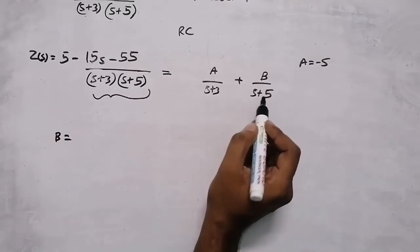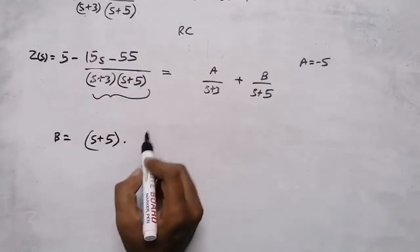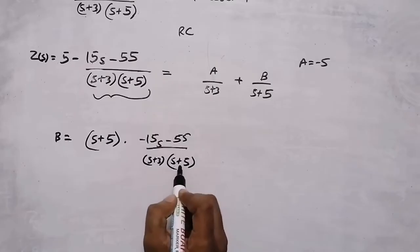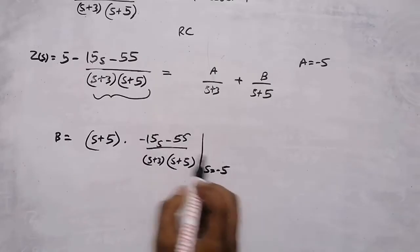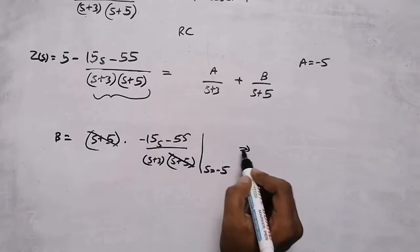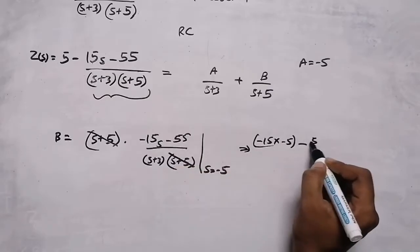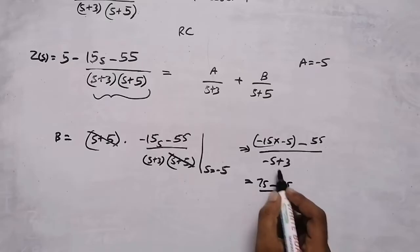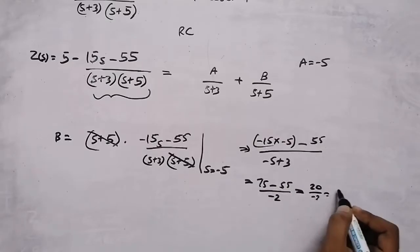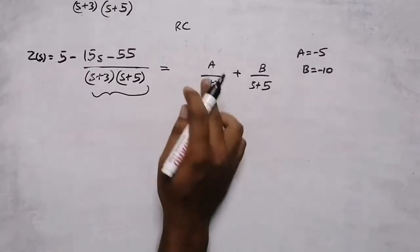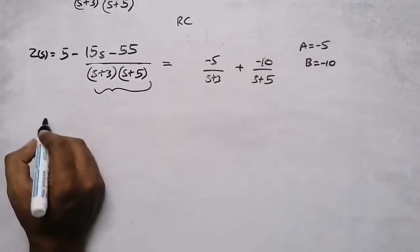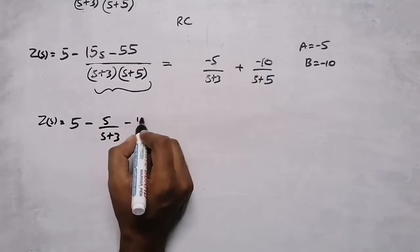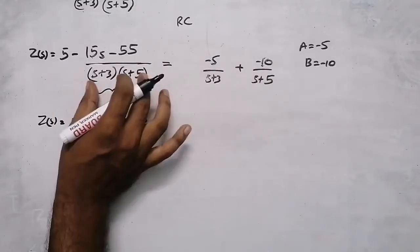For finding B, multiply by s plus 5 and evaluate at s equals minus 5: minus 15 times minus 5 minus 55, divided by minus 5 plus 3 equals 75 minus 55 over minus 2, giving 20 over minus 2, so B equals minus 10. Therefore, instead of A we write minus 5 and instead of B we write minus 10.